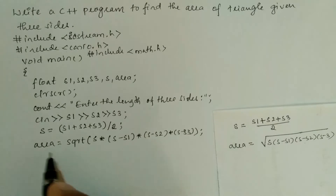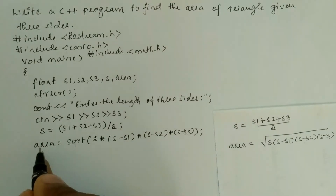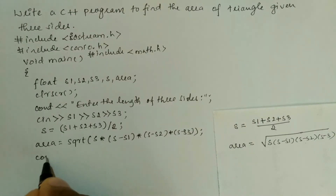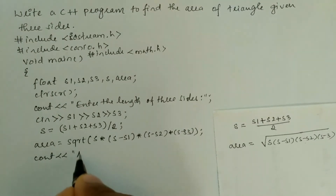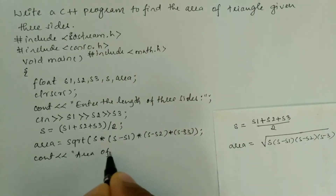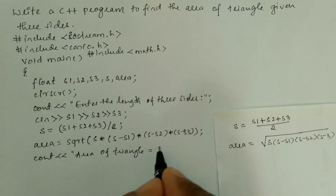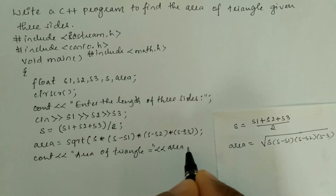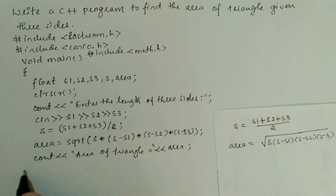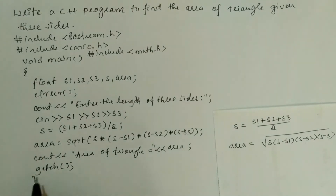After this, the simplified answer is stored in the variable area. We write cout with the stream insertion operator and in double quotation marks: "Area of triangle is =", then the stream insertion operator followed by the variable area, and a semicolon. Finally, we write the getch() function and the curly closing brace for the void main function.